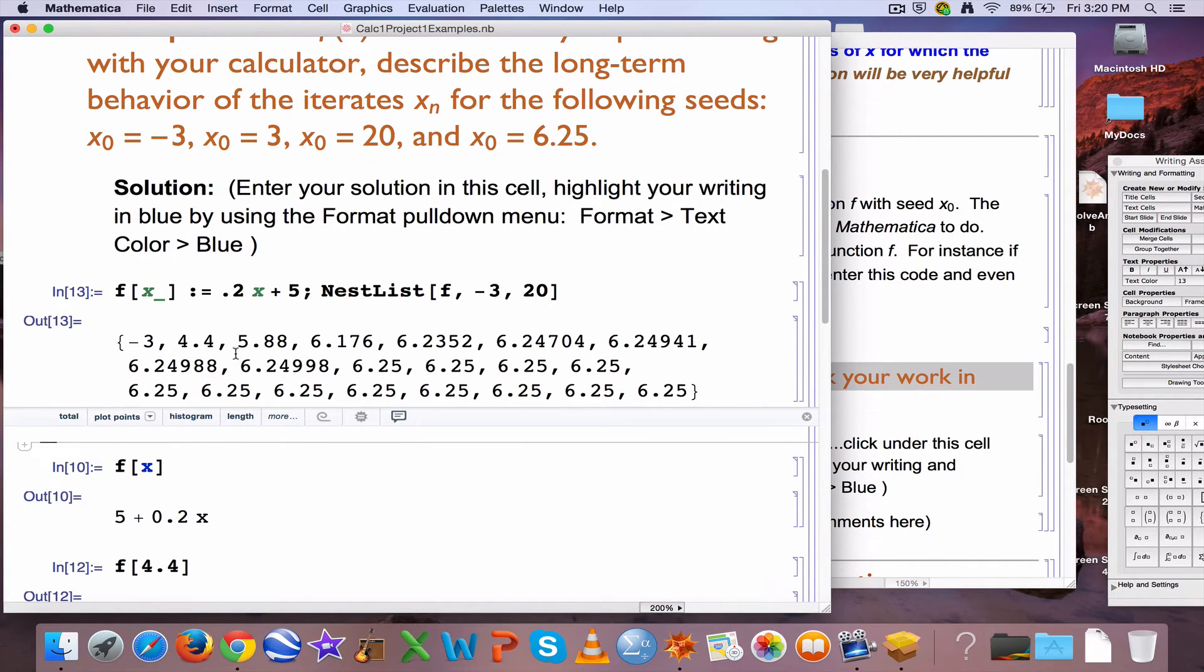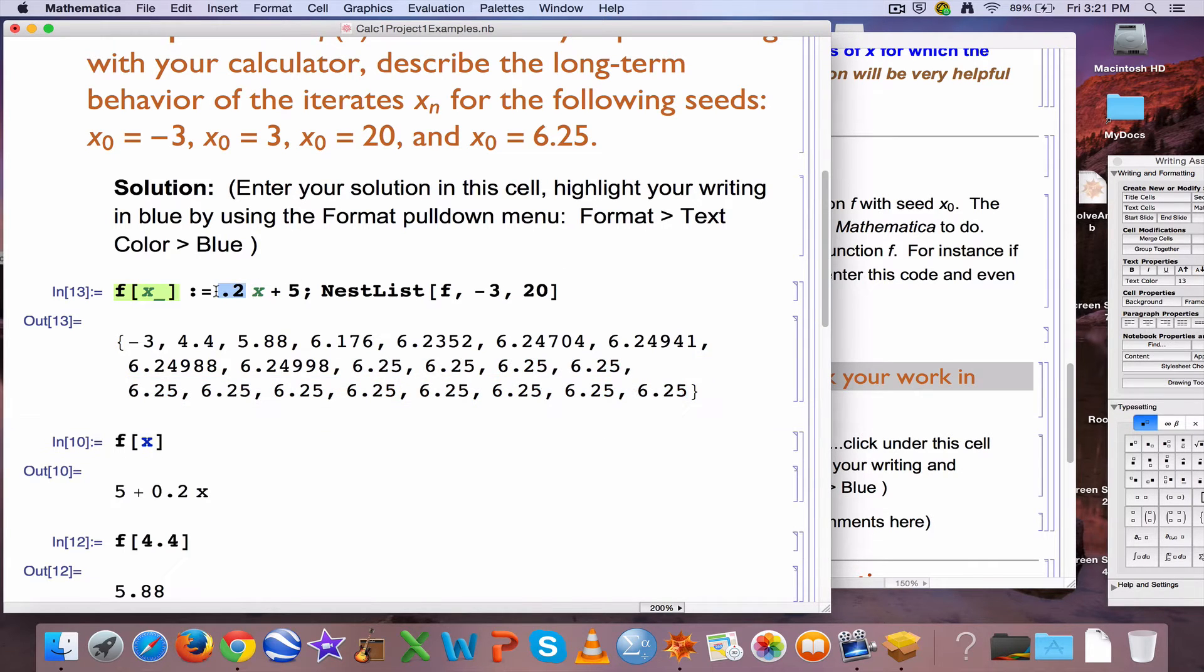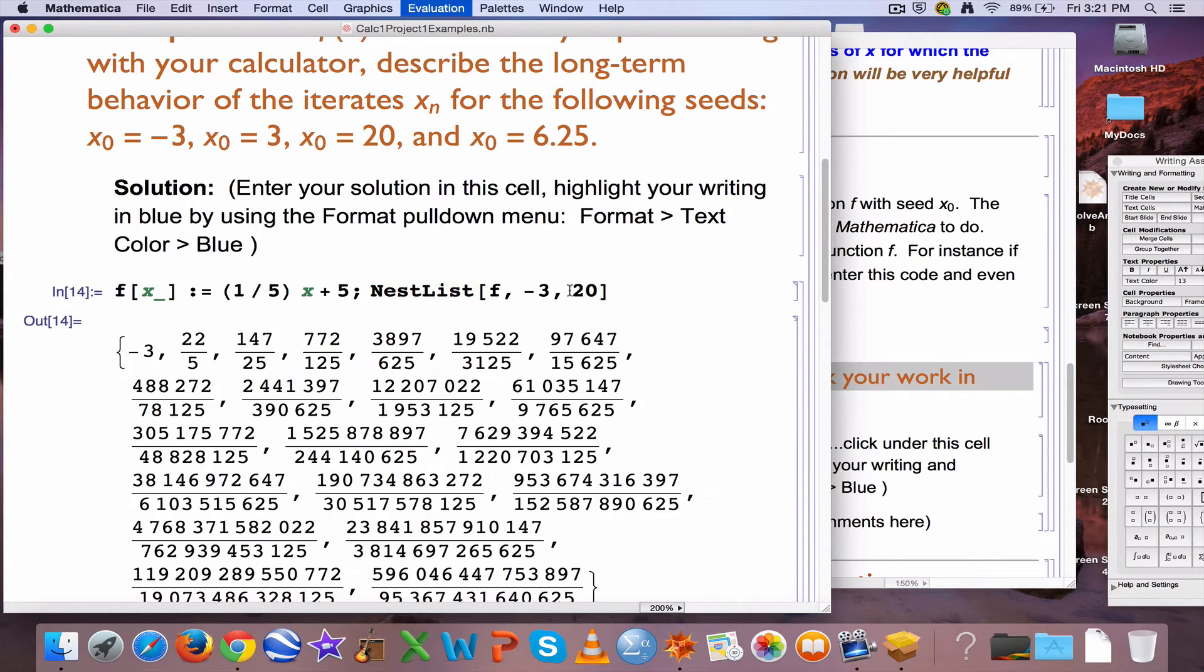And what's the behavior? It seems that these iterates, if you look at them, are approaching 6.25, Mathematica is rounding them to equal 6.25 exactly, but that is rounding, it's actually never exactly equal to 6.25. And if I made this 0.2 a 1 fifth, for example, we would see that you'd get fractions instead of decimals, and they're never equal to each other. And in fact, they're never equal to 6.25 exactly.